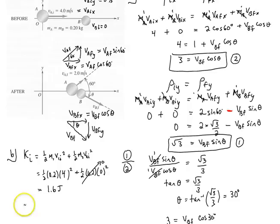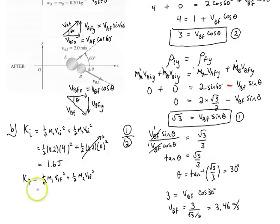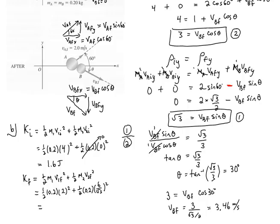Now computing the final kinetic energy: KE final = ½·M1·V1f² + ½·M2·V2f² = ½·(0.2)·(2)² + ½·(0.2)·(3.46)² = ½·(0.2)·(6/√3)² = 1.6 joules. The initial and final kinetic energies are the same, so this is an elastic collision.